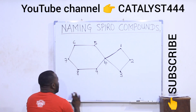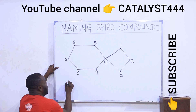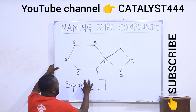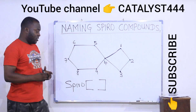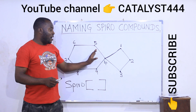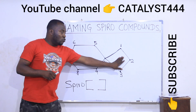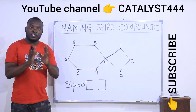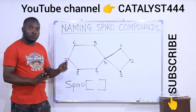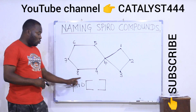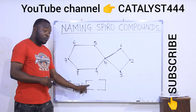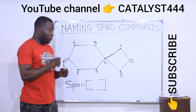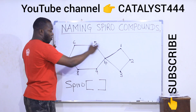Now how do I name this? Because it is a spiro compound, the name will start with 'spiro.' You open a square bracket. Then inside the square brackets, you tell us how many carbons make up each side of the spiro compound — the lower side first, then the higher side — followed by the total number of carbons present, which is nine.